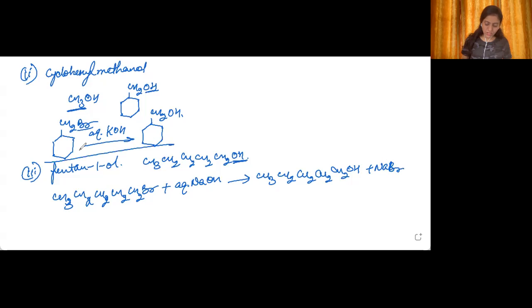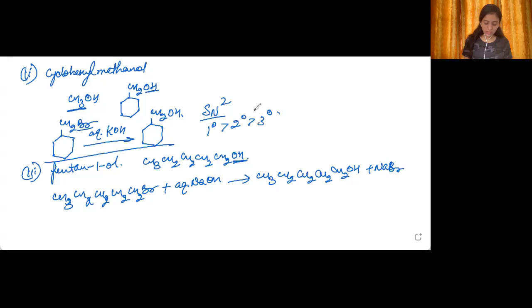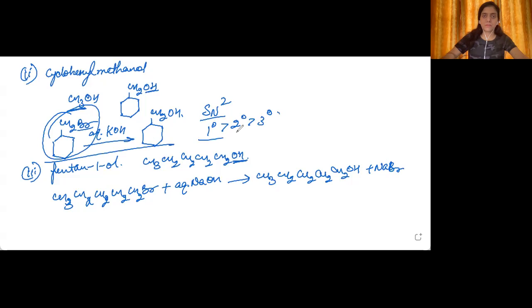Note that in part two we were told to use the SN2 mechanism. The order of reactivity of alkyl halides towards SN2 is: primary > secondary > tertiary. Here we used a primary alkyl halide, so it is highly reactive towards the SN2 mechanism. That's all for this video — the next questions will be in the next video. Stay tuned, keep practicing, and write your problems in the comment section below.